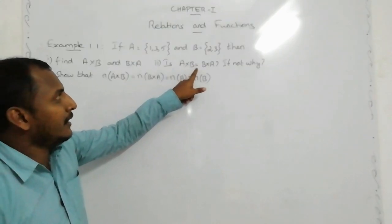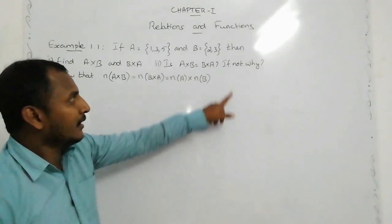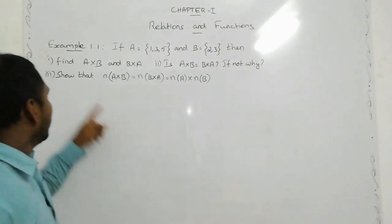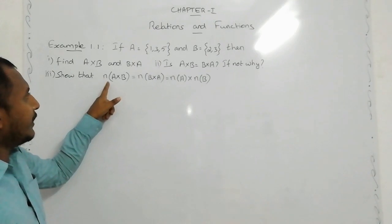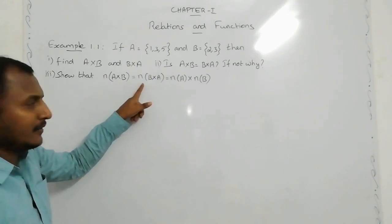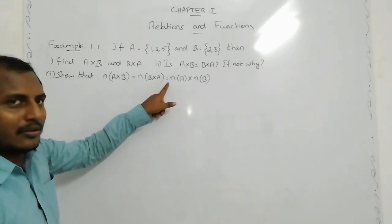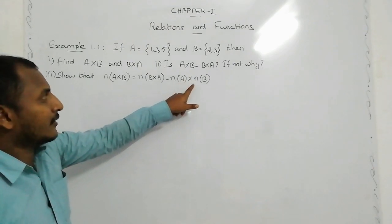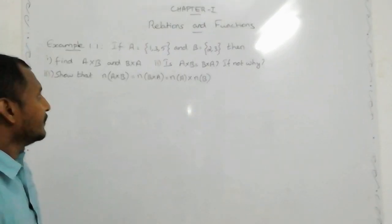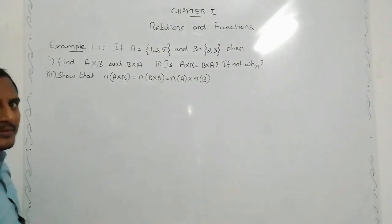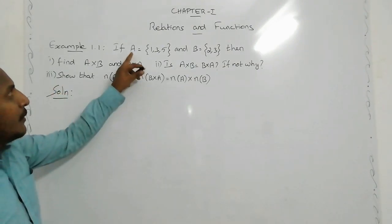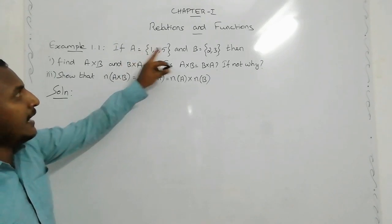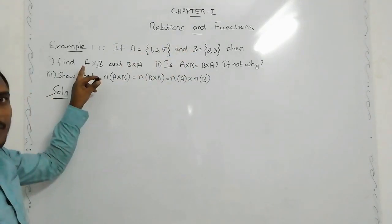Second part: is A cross B equal to B cross A? If not, why? Third part: show that n of A cross B equals n of B cross A, which equals n of A cross n of B. So we have sets A and B. First, we find out A cross B.